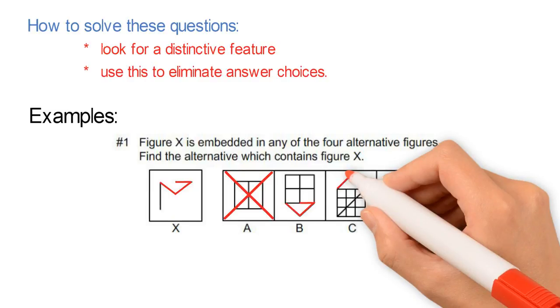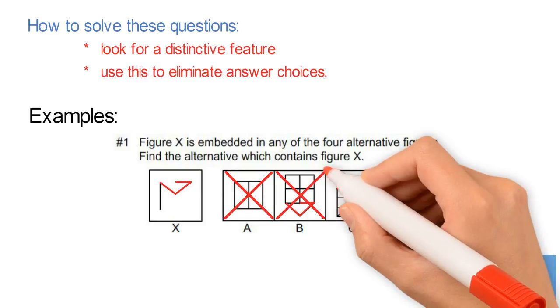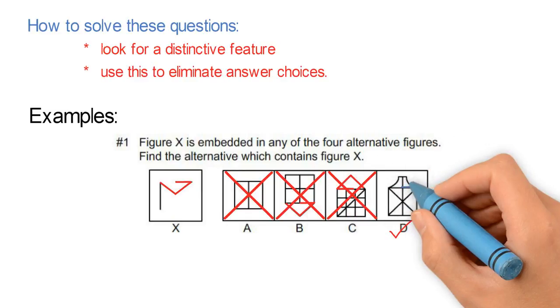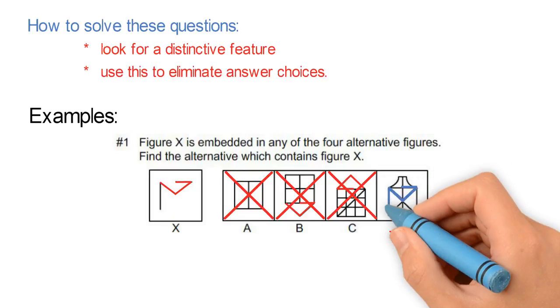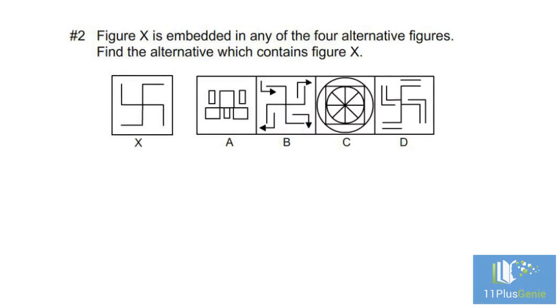but neither of them have the vertical line. The correct answer is D, and here is the shape we are looking for. Example #2: Figure X is embedded in any of the four alternative figures.